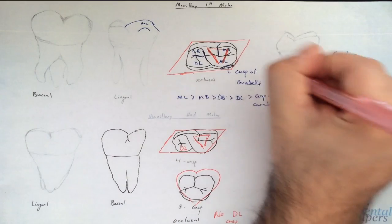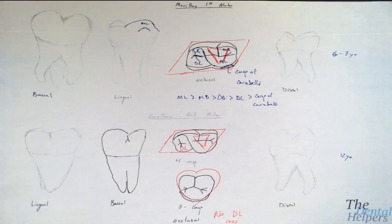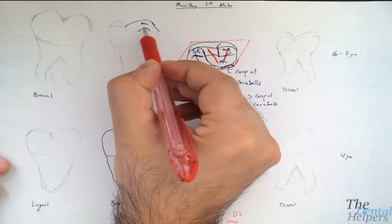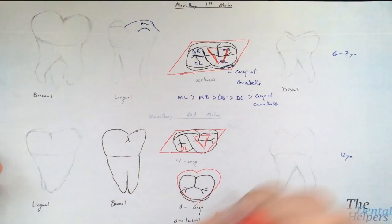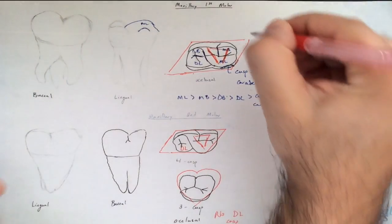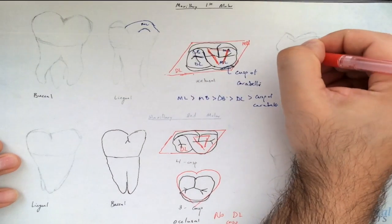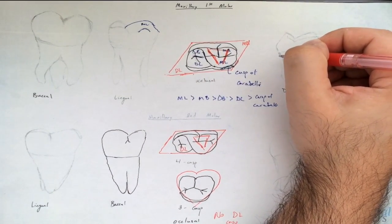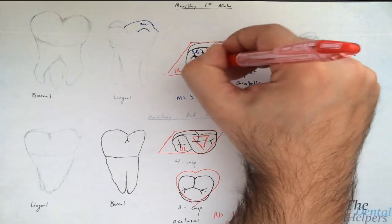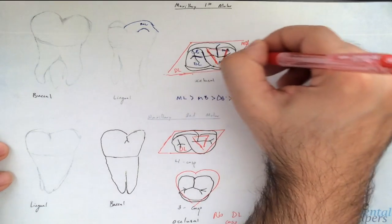The cusp of Carabelli is only seen in about two-thirds of the population. In terms of its position, it's typically non-functional. Regarding the acute angles of the parallelogram occlusal outline, the mesial buccal and the distal lingual are the acute angles. Since the mesial lingual cusp in the maxillary first is the biggest cusp, you'd expect that angle to be obtuse.